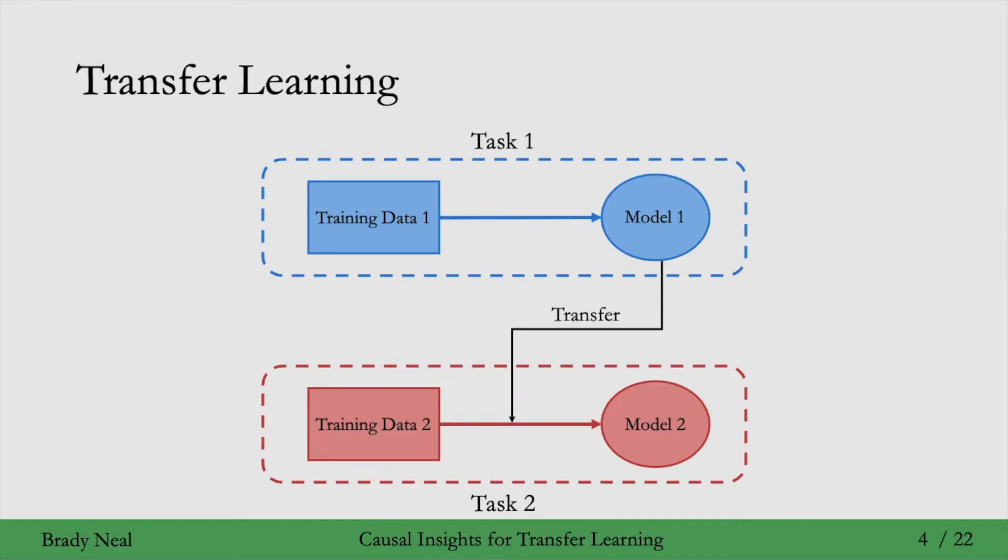Here's the general structure of the transfer learning problem. So we have training data in one task, in one data distribution, that's what this task 1 is here. And we have samples of that distribution, that's our training data 1, and then we use those to learn this model 1. And then the transfer part is we have another task, task 2, which is a different data distribution. And we want to transfer information between the two tasks. So for task 2, we could also have training data from that different distribution, that task 2 distribution. And then we use that data along with the transferred knowledge or transferred information from task 1 to learn a model 2 for task 2.